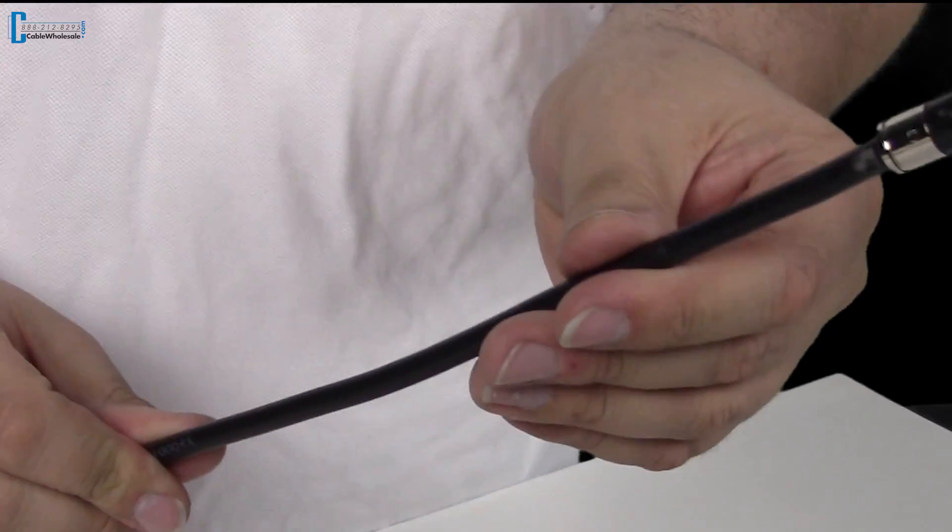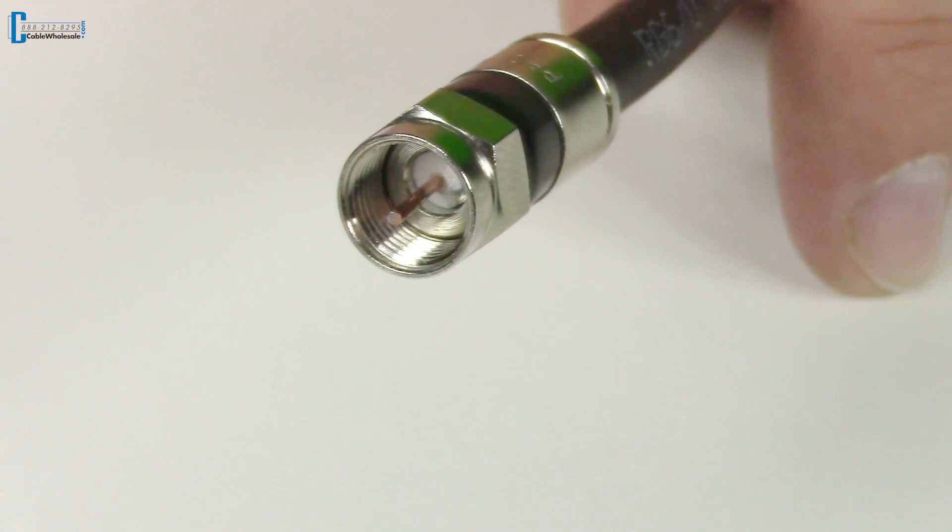And there you have it. Your very own compression F-pin coax cable.